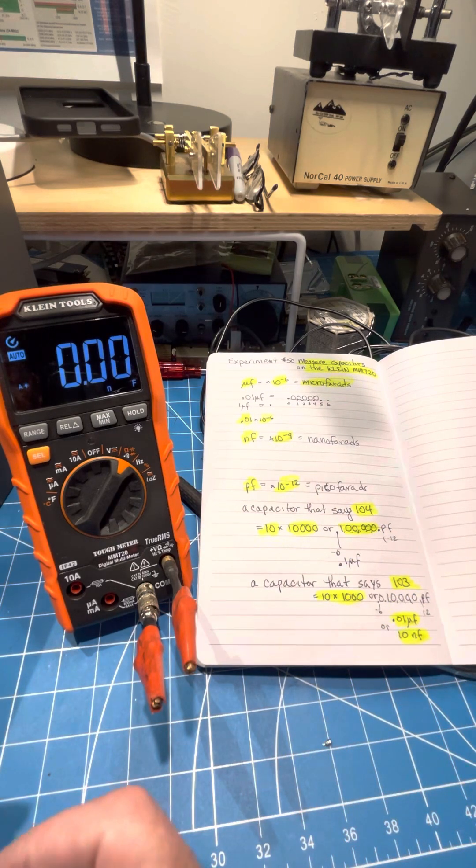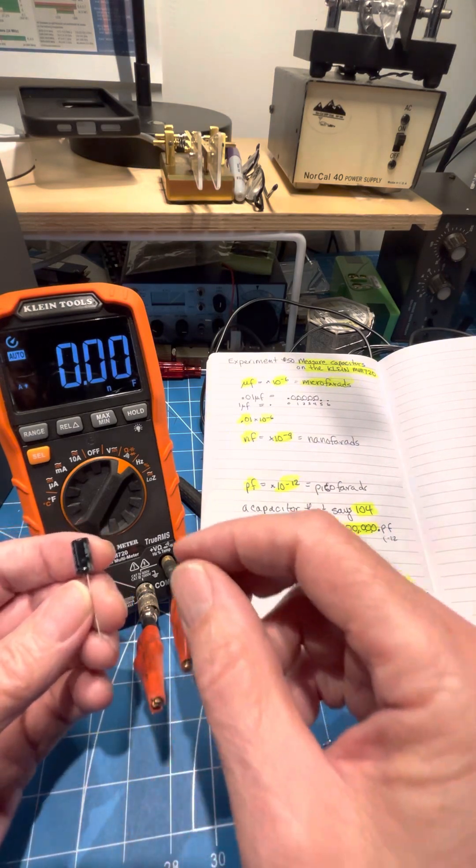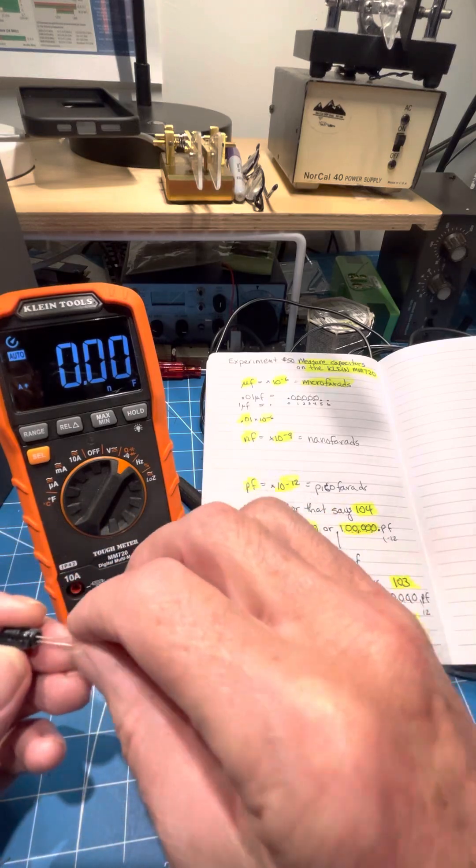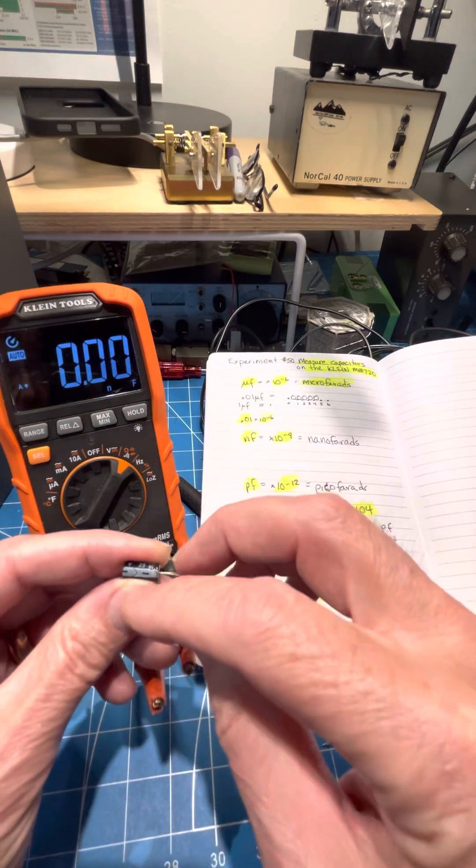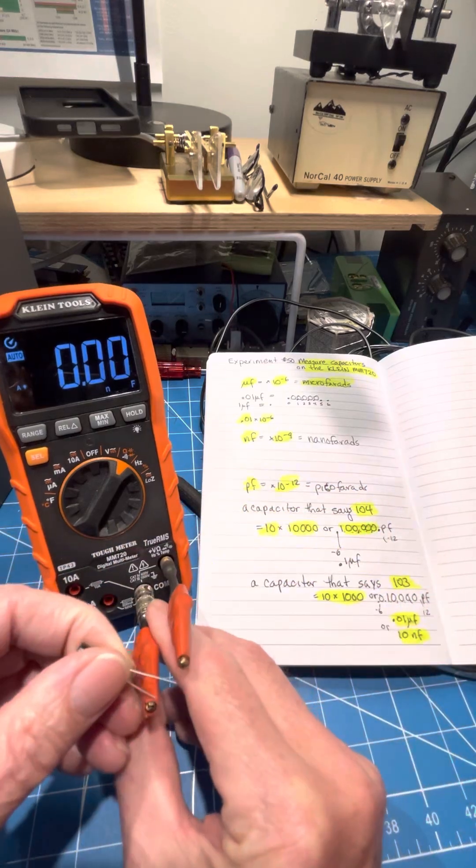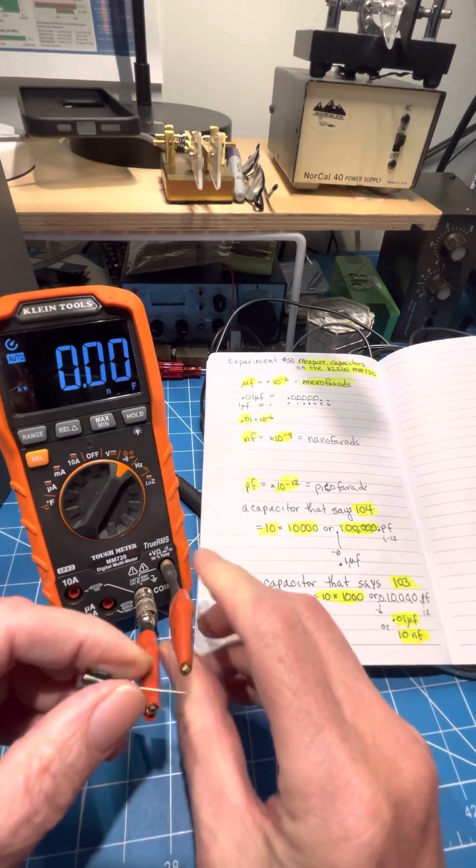So we're going to start with one that is 100 microfarad. We're going to put the minus lead on the minus. You can see the minus here, sticking it on. We're going to stick it between these probes that I made.